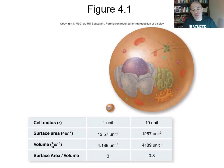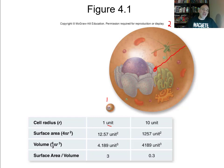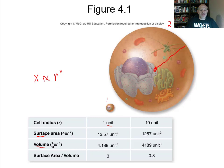When a cell gets bigger — say comparing a cell with a 1-unit radius to one that is 10 times bigger — different variables change at different rates. Circumference is directly proportional to the radius to the first power, so it grows at the same rate as the radius. Surface area is directly proportional to the radius squared, so as the cell grows, the surface area gets bigger but by the square of the radius.